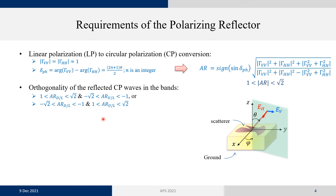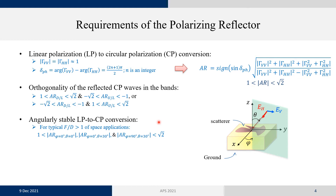Something else we need is that for a space application where the reflector is spatially fed, for a typical value of f/D greater than 1 — where f is the distance between the feed and the reflector, and D is the dimension of the reflector — we need the performance of this linear-to-circular polarizing reflector to be stable for oblique incidence up to 30 degrees in both φ = 0° and φ = 90°. Preferably, we also want a low-profile single-layer structure.